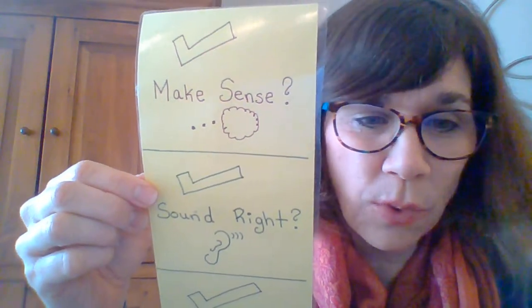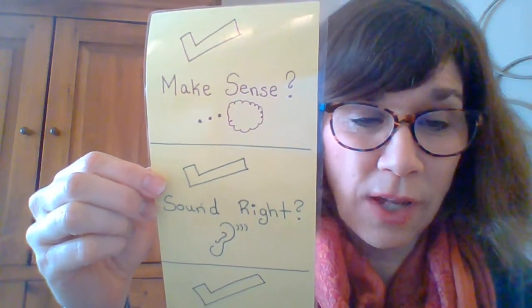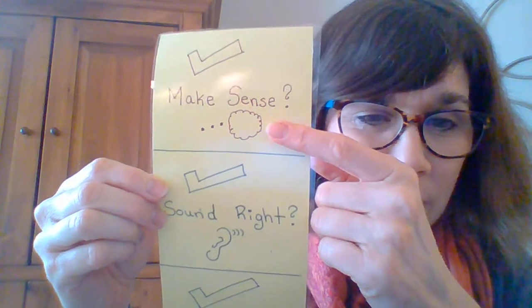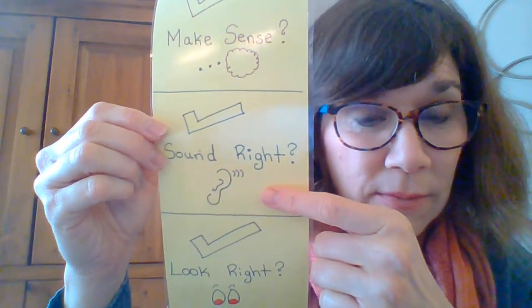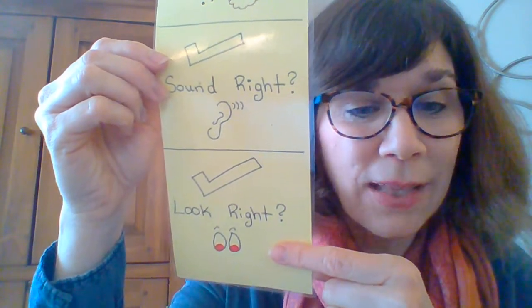Good job, first graders! So today we practiced two things that readers do. We practiced that when you are solving tricky words in any of the books you are reading, you always want to check yourself and do your triple check: does it make sense? Does it sound right? And does it look right — does it match the letters? Also, after you read a story, you always want to think about how to retell what you just read: what happened first, what happened in the middle, and what happened at the end. I hope you enjoyed the story today. Enjoy reading, and I will see you again next week. Thank you.